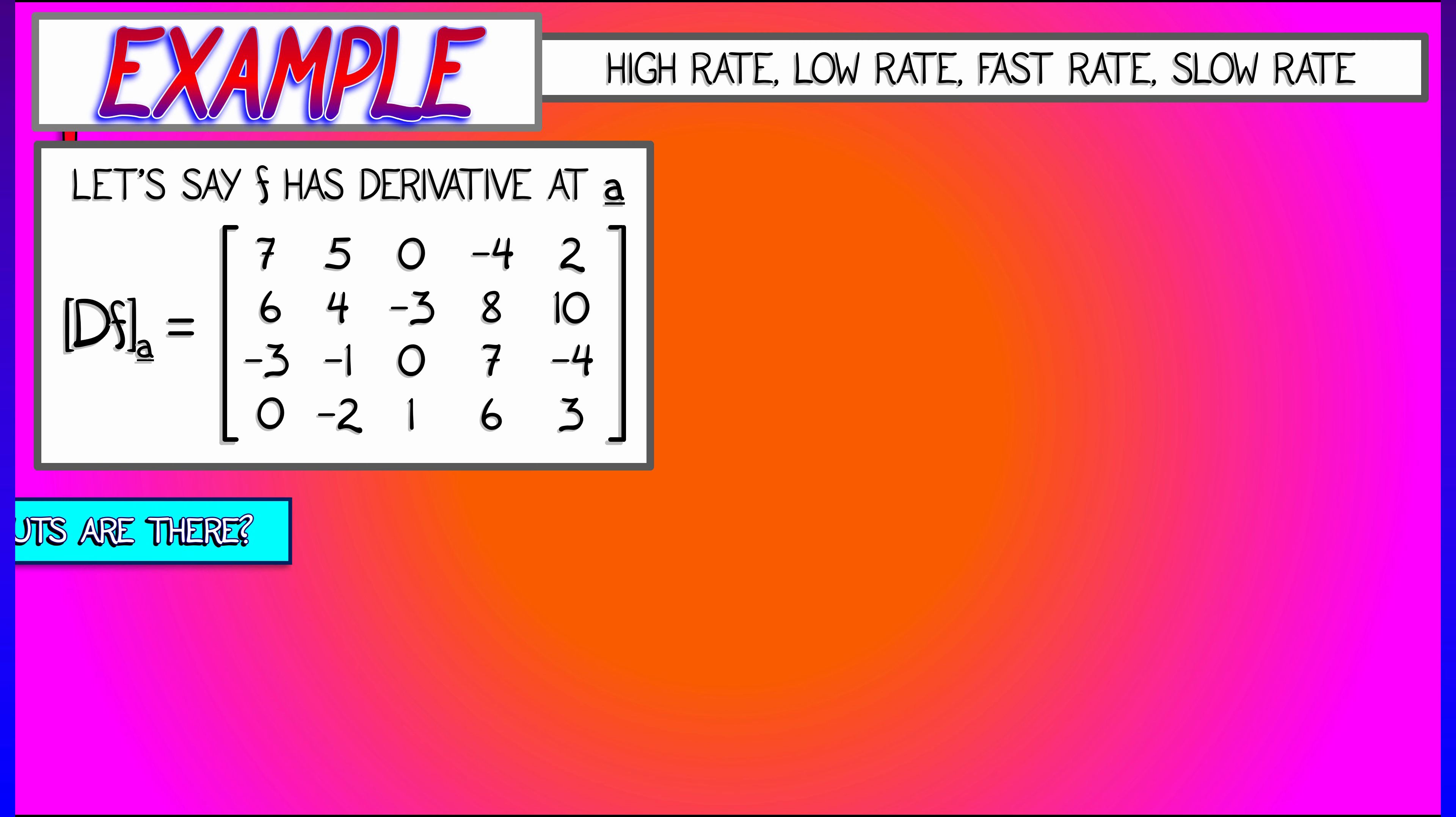Let's say I ask you, how many inputs does this function have? Well that's really corresponding to the columns of the derivative, that's five.